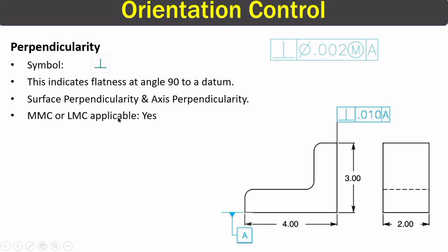There are two types of perpendicularity: surface perpendicularity and axis perpendicularity. MMC or LMC are applicable to perpendicularity in some features, but not applicable in others. If you don't know about MMC or LMC, I will provide the link to a short video in the description so you can develop a good understanding of those concepts.